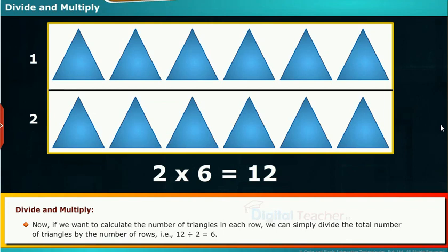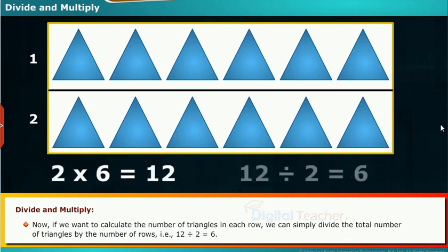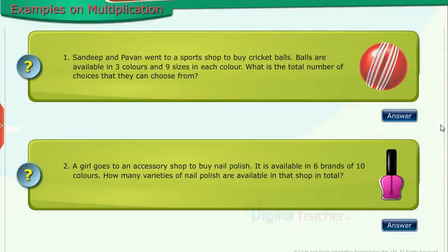Now, if we want to calculate the number of triangles in each row, we can simply divide the total number of triangles by the number of rows, that is 12 divided by 2 equals 6. Let us see some example problems on multiplication.